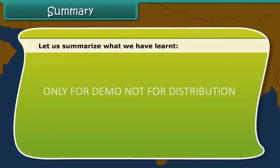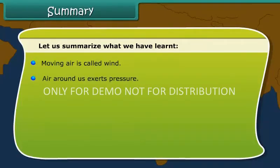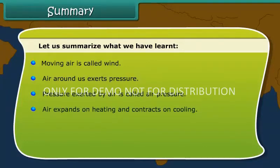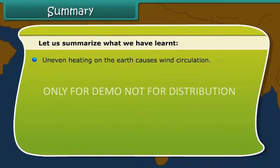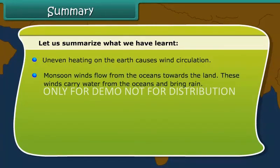Let us summarize what we have learned. Moving air is called wind. Air around us exerts pressure. Pressure exerted by air is called air pressure. Air expands on heating and contracts on cooling. Warm air is lighter than cold air — warm air rises up, air pressure at that place decreases, and cooler air moves to that place. Uneven heating on the earth causes wind circulation. Monsoon winds flow from the oceans towards the land and carry water to bring rain.